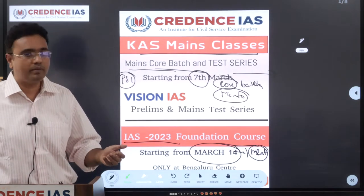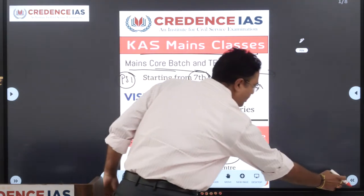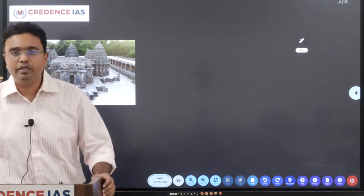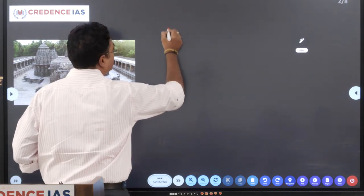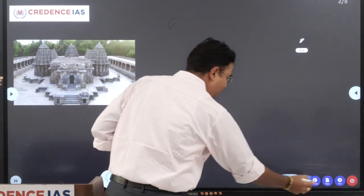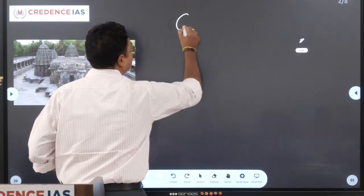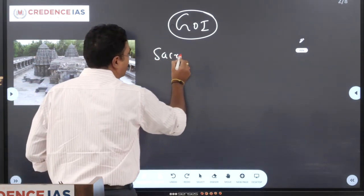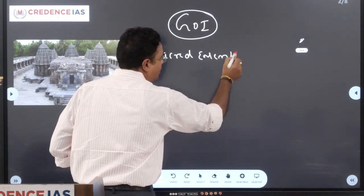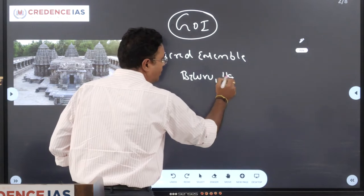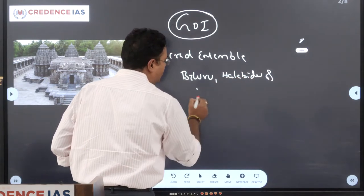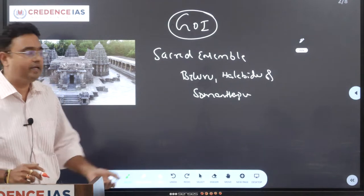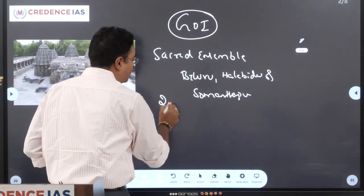So moving on to the current affairs discussion, we will start from Belur Halebidu. It is an issue because the government of India recently gave out the list to the World Heritage Site Center to include the sacred ensembles of Belur, Halebidu and Somnathpur to be included in the UNESCO World Heritage Site. This is the list which is sent by India for the year 2022-23.